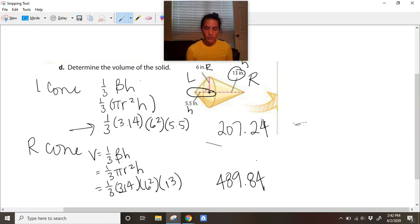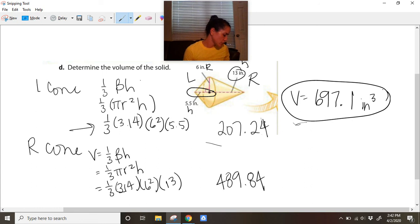And when I add those together, 207.24 + 489.84, I get... my volume is 697.1 inches cubed. Now again, if you're using the π key, your answer might be 697.5 or 698.0, but I didn't use the π key, I just used 3.14. So that is my last example for you.